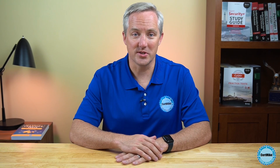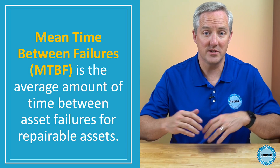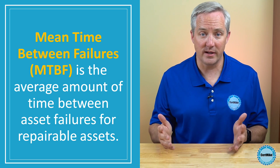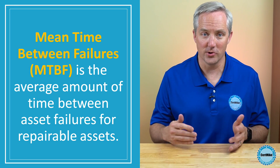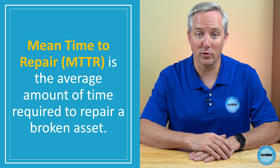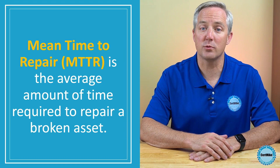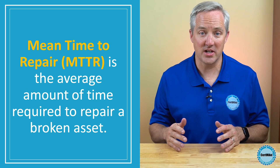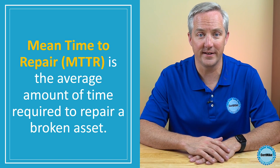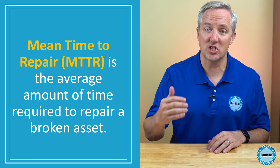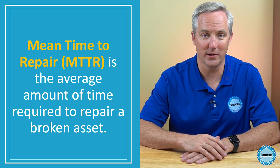If our asset is repairable, we look at two different values. The first is the mean time between failures, or MTBF. This is very similar to the MTTF — it's the average amount of time that passes between the failures of a repairable asset. The second value that we track for repairable assets is the mean time to repair, or MTTR. This is the amount of time that an asset will be out of service for repair each time that it fails. When we look at those two values together, we can get a good idea of the expected downtime for an IT component.